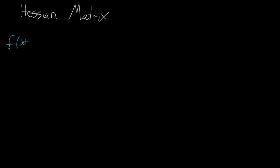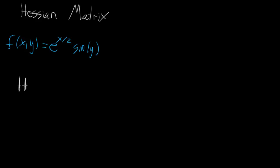So let's say you have some kind of multivariable function. What the Hessian matrix is — and it's often denoted with an H, or a bold-faced H — it's a matrix that contains all the second partial derivatives of F.